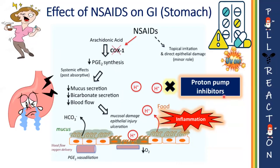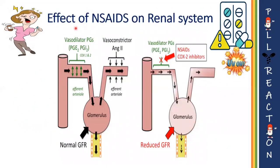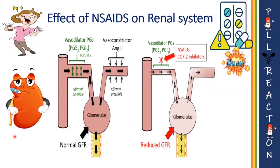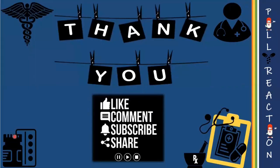Renal prostaglandins function primarily as vasodilators in the kidney, thereby dilating blood vessels and increasing blood flow to the renal system. When NSAIDs are given long-term, they can adversely affect the renal system by blocking the production of prostaglandins, resulting in a decline in GFR that can ultimately result in acute kidney injury. Thank you — please like, share, and subscribe to our channel.